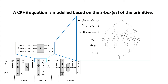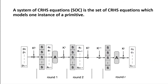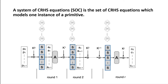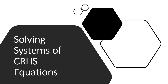To recap: the input bits of the s-box are associated with the top layers of the graph, the output bits with the bottom layers, and the graph is constructed according to the s-box's input-output pairings. This is how we create one compressed right-hand side equation. To model a whole primitive we need one compressed right-hand side equation for each application of an s-box. This system of compressed right-hand side equations — called a SOC — is the set of all equations modeling one instance of a primitive.